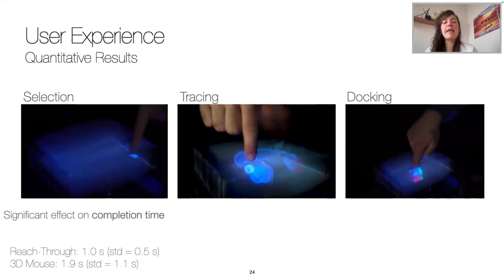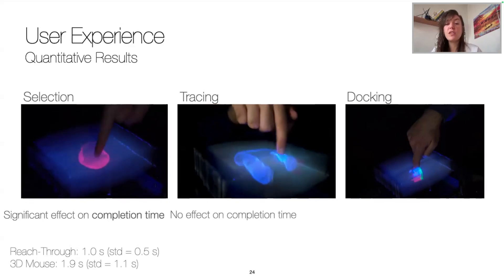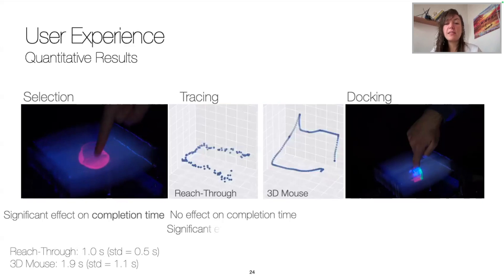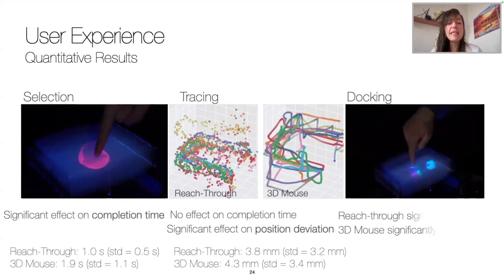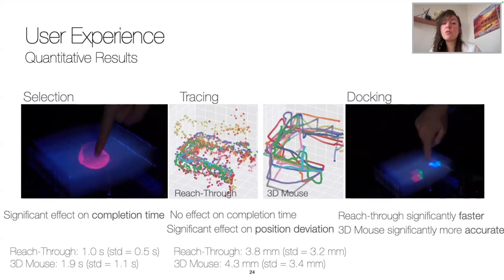So first, for the selection task, we noted a significant effect on completion time using the reach-through modality. However, in the tracing task, no effect was noted. And as we can see on this animation of a user tracing one of the circuits, the position deviation using reach-through modality was, however, significantly enhanced. Finally, in the docking task, we noted a classic compromise as reach-through was significantly faster, while the 3D mouse was significantly more accurate.